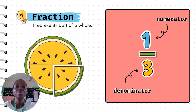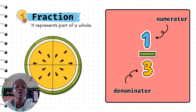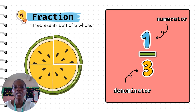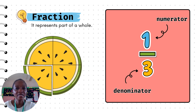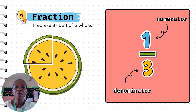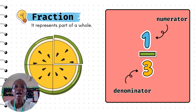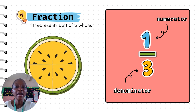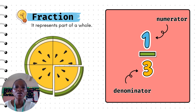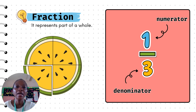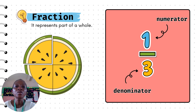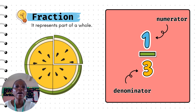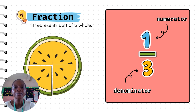What is a fraction? Fractions represent parts of a whole. For example, as you can see, the orange slice is cut into four different parts. So that means each part is one fraction out of four.